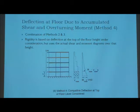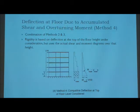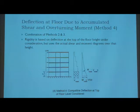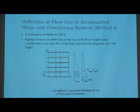Method 4 is the most complex one and because of that, it is the most accurate out of all of them. It's a combination of Methods 2 and 3: Method 2 takes the point load at the story above consideration, and Method 3 accounts for the distributed loading. The rigidity from this method is based on deflection at the top of the floor height under consideration, so it doesn't have to be the full building height like in Methods 1 and 3. Because it's a combination, we get a better idea of both the shear and the moment — though it's still just an approximation at the end.